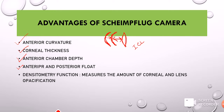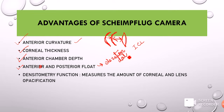Along with that, the Scheimpflug camera also provides anterior and posterior float data — which will be explained in detail in Part 2 of this series. For now, note that the anterior and posterior curvature of the cornea can be measured using the Scheimpflug camera; however, these are not simple calculations like anterior curvature — they are based on the principle of elevation data, also to be explained in the next video.